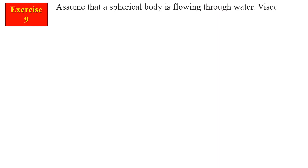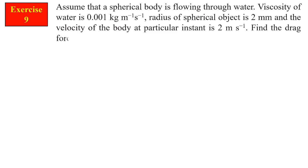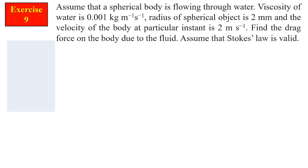Assume that a spherical ball is flowing through water. The viscosity of water is 0.001 kg per meter per second. The radius of the spherical object is 2 mm and the velocity of the body at a particular instant is 2 meters per second.